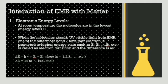Discussing the interaction of EMR with matter, the first point is electronic energy levels. At room temperature, molecules are in the lowest energy levels. The molecules absorb UV visible light from the EMR, and the lone pair electron is promoted to higher energy states such as E1, E2, and E3, which is known as electronic transition. The difference is denoted as delta E equals HV, which equals EN minus E0, where N can be 1, 2, or 3, and the value of delta E comprises 35 to 71 kcal per mole.